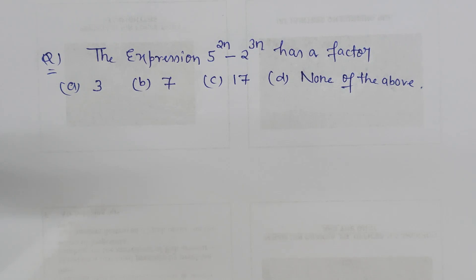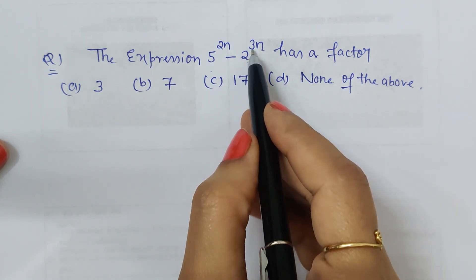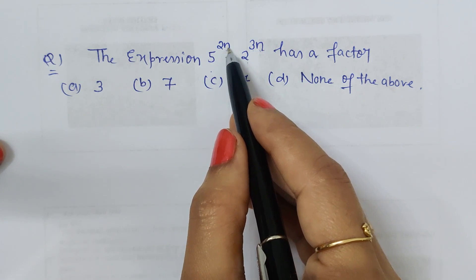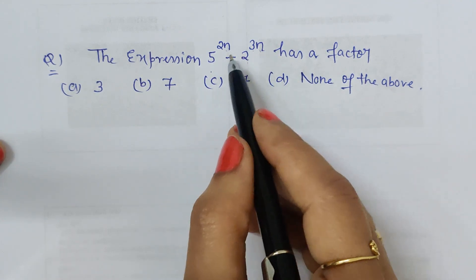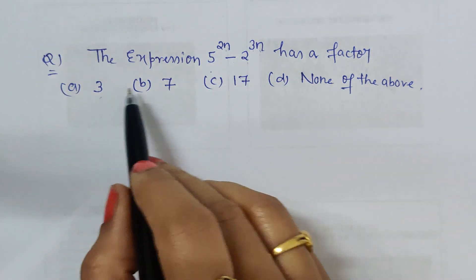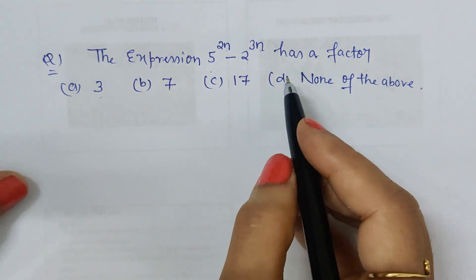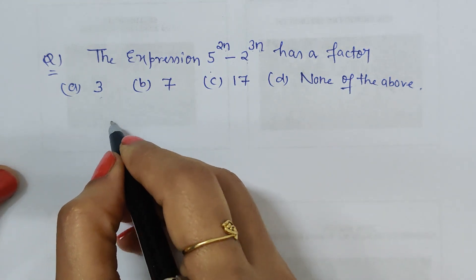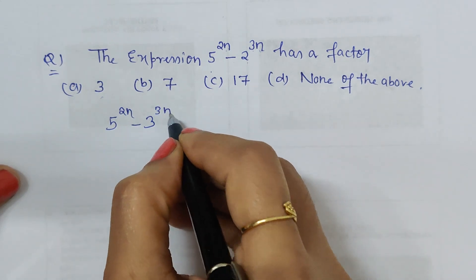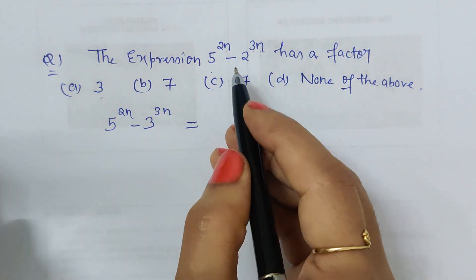Let's see how to find the factor of the given expression 5 to the power 2n minus 2 to the power 3n. Here n can have any value like 1, 2, or 3. By putting and solving, whatever answer we get must have one of the options as its factor. What we have to do is apply n equal to 1 to get the least possible number.